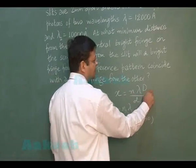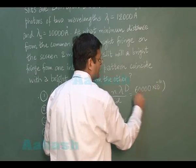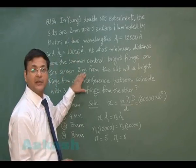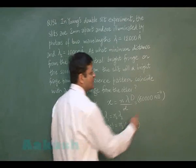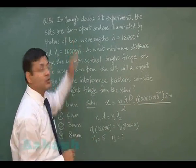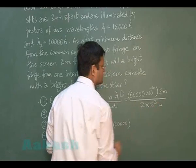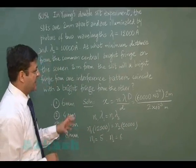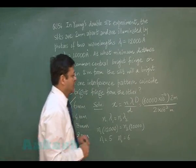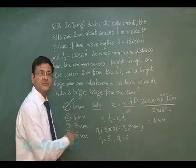Substituting 60,000 angstrom (= 60,000 × 10⁻¹⁰ m), capital D = 2 meter, and small d = 2 mm = 2 × 10⁻³ meter into the formula gives the minimum distance as 6 mm. So the most appropriate option is the first one, 6 mm.